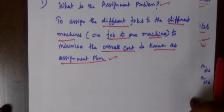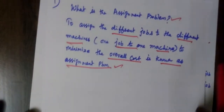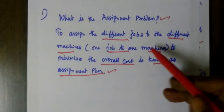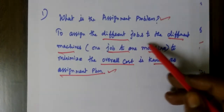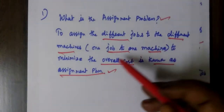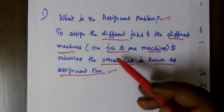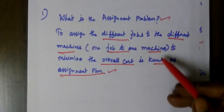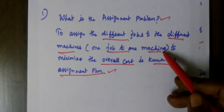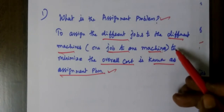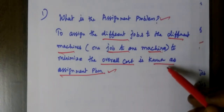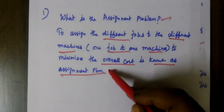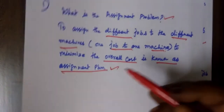So what is the assignment problem? To assign different jobs to different machines — that is, one job to one machine, not more than that — in order to minimize the overall cost. That is known as the assignment problem.